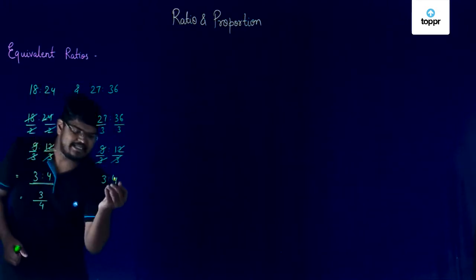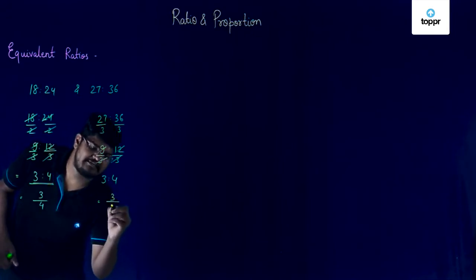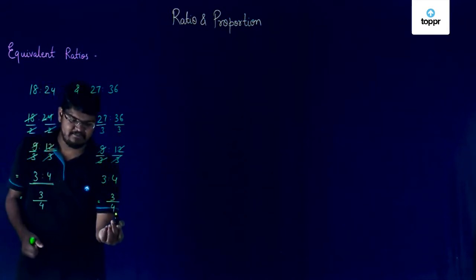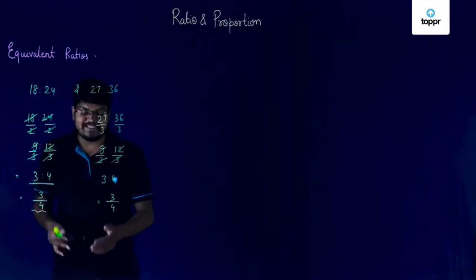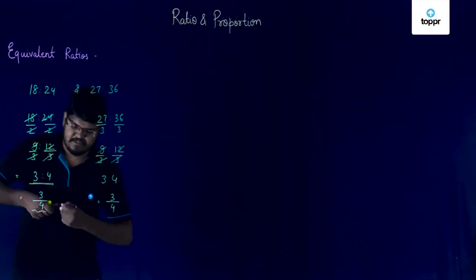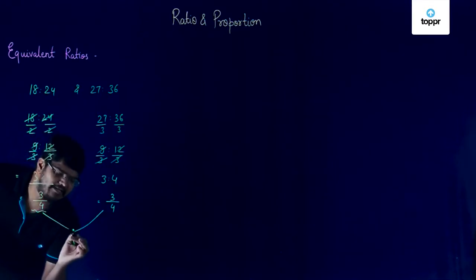You can see that this 3 is to 4 can also be written as 3 by 4 which is exactly similar to this 3 by 4 we obtained previously. Since both these ratios are exactly same, they are known as equivalent ratios.